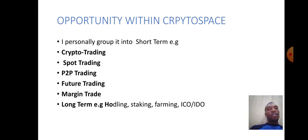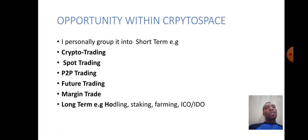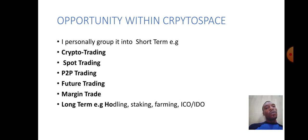The opportunities within the crypto space — I personally group them into short-term and long-term. Short-term examples: crypto trading, spot trading, P2P trading, futures trading, margin trading. Long-term examples: holding, staking, farming, ICO or IDO. Spot trading: you buy, you wait for the price to go up, then you sell. P2P trading: you buy USDT when it's low and sell when it's high. We'll talk more about all of these later.